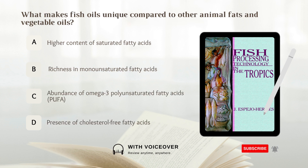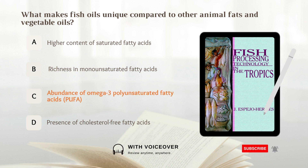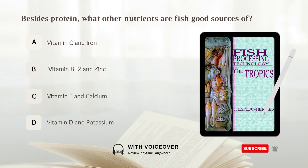What makes fish oils unique compared to other animal fats and vegetable oils? A. Higher content of saturated fatty acids. B. Richness in mono-unsaturated fatty acids. C. Abundance of omega-3 polyunsaturated fatty acids. D. Presence of cholesterol-free fatty acids. Answer: C. Abundance of omega-3 polyunsaturated fatty acids makes fish oils unique compared to other animal fats and vegetable oils.